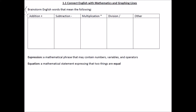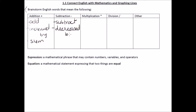We're going to brainstorm English words that mean the following math operations. For addition: add, increase by, or sum. For subtraction: subtract, decrease by some amount, or looking for the difference. For multiplication: multiply, times, or product.